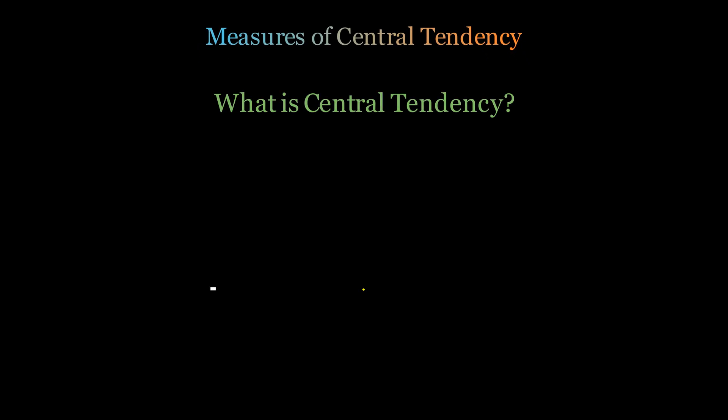Imagine you are trying to understand a group of people's heights, or test scores, or incomes. Central tendency is like finding the gravitational center of your data—the point around which most of your data naturally clusters, just like a balance scale finds its equilibrium.